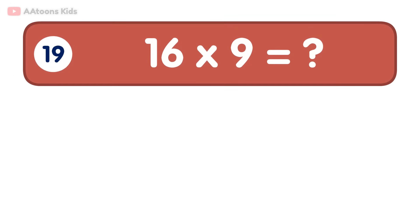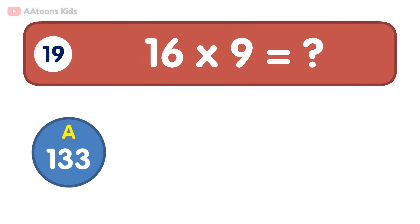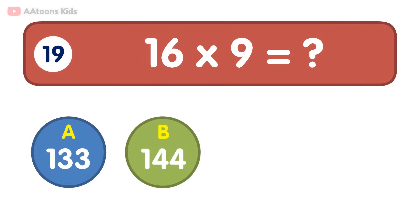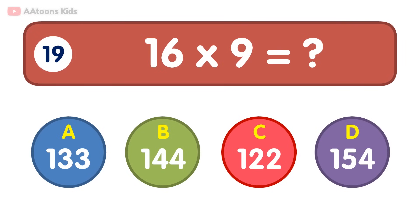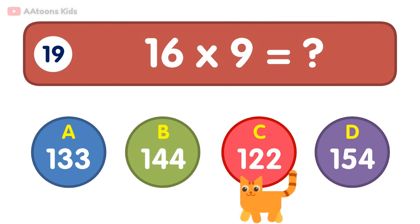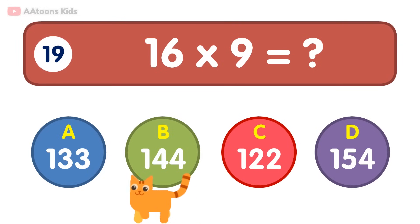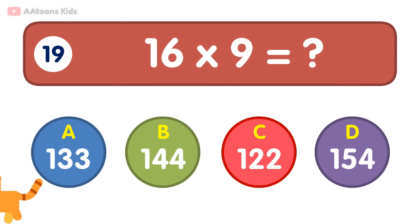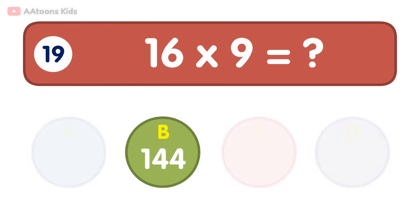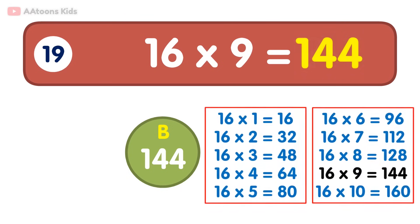16 times 9 is equal to 144. 16 times 9 is 144.